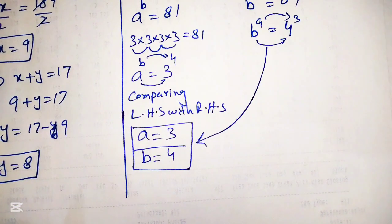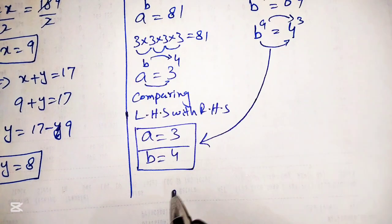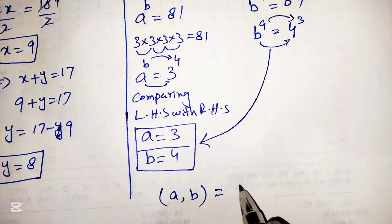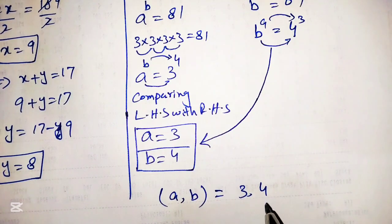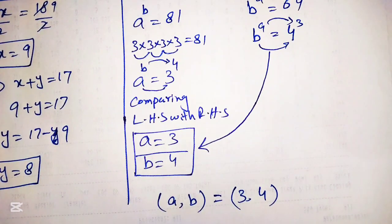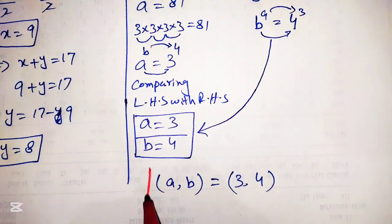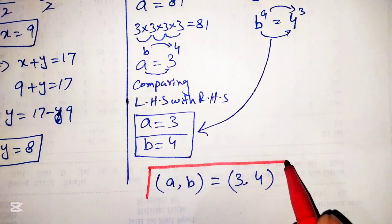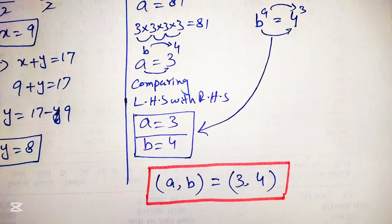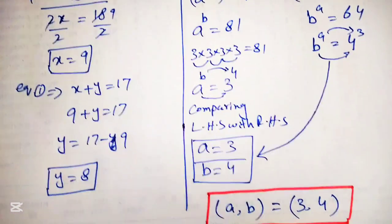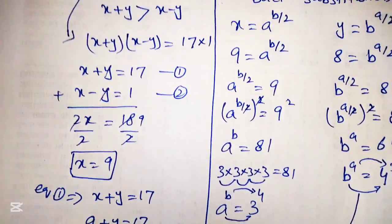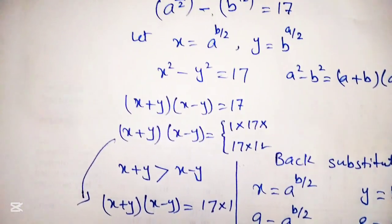Hence the final solution of our given equation is a equals 3 and b equals 4, which we can express as ab equals 34. Thank you so much for watching this video. Please subscribe to my channel for more interesting videos, and if you have any other easy solution for this question, please share it with us in the comment section. Thank you.